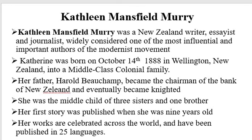Let's start our discussion with the biography of Kathleen Mansfield Murray. She was a New Zealand writer, essayist, and journalist, widely considered one of the most influential and important authors of the modernist movement. Kathleen was born on October 14, 1888, in Wellington, New Zealand, into a middle-class colonial family. Her father, Harold Beauchamp, became the chairman of the Bank of New Zealand and was eventually knighted. She was the middle child of three sisters and one brother. Her first story was published when she was just nine years old.